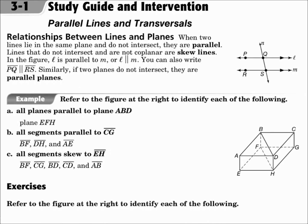This is lesson 3.1, Parallel Lines and Transversals. The objectives are to determine the relationships between two lines and two planes, and to find angle pairs formed when lines are intersected by transversals.